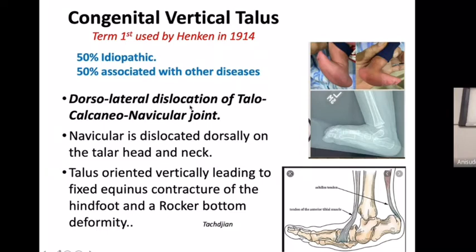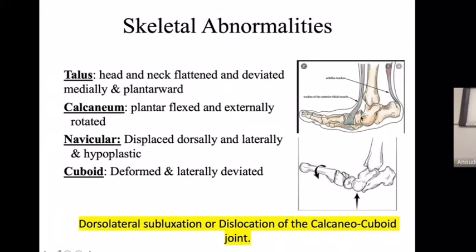There is dorsolateral dislocation of the talonavicular joint, which we usually call the mid-tarsal joint. The navicular is dislocated dorsally and the talus head is dislocated downward. Therefore, the talus is oriented vertically, leading to fixed contracture of the hindfoot and rocker bottom deformity. There is equinus due to the verticality of the talus and calcaneum. The talus head and neck are flattened because of the dislocation of the navicular. The navicular is also displaced dorsally and laterally and is hypoplastic.